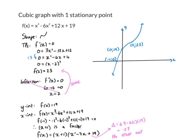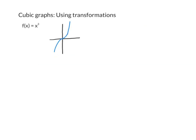Here's the most basic cubic graph, y equals x cubed. As you can see, it has only one stationary point, which is also the inflection point, and that lies at the origin. Functions in a similar format can be drawn using transformations. So if you've got x cubed plus 4, it will just move the original graph 4 up, meaning the inflection point is now at 0 and 4. You could also work out the x-intercept, which would be the negative cube root of 4.